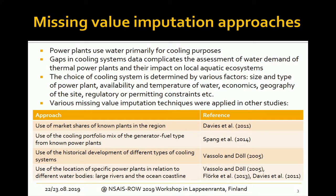The choice of cooling system depends on many different factors — these are not mutually exclusive and there can be additional factors. The size of the power plant, the generator type, the availability and temperature of water all play a role. In some regions, if you don't have water you cannot use a cooling technology that requires a lot of it. Other factors include the region, regulatory requirements, and whether you're required to use a certain mix of cooling technologies.